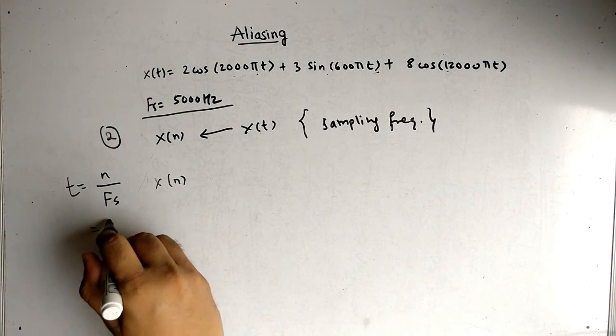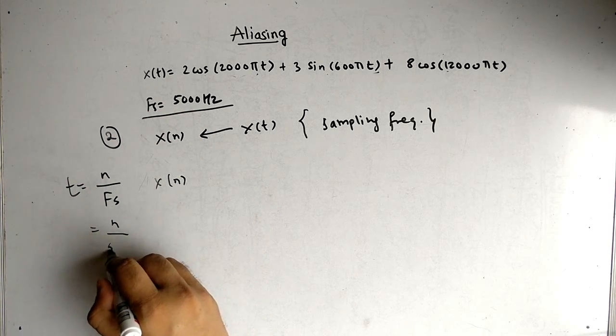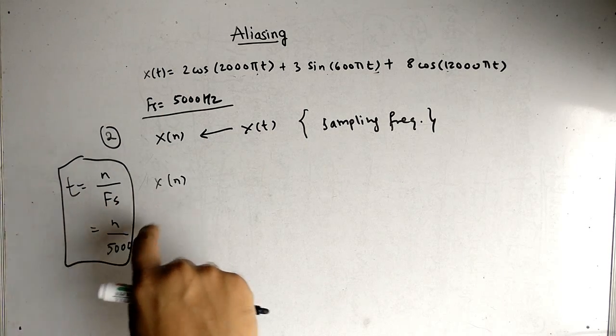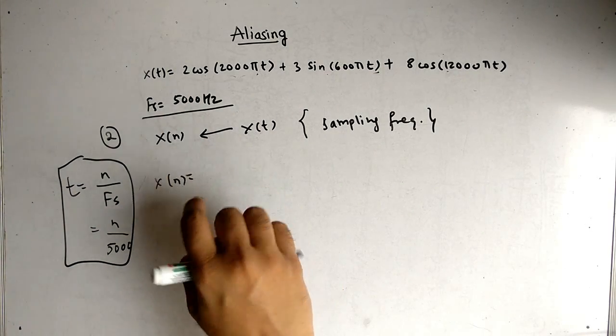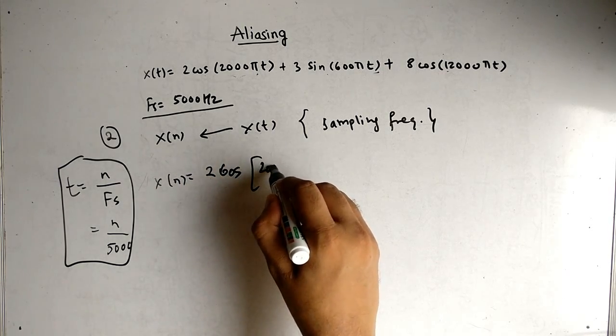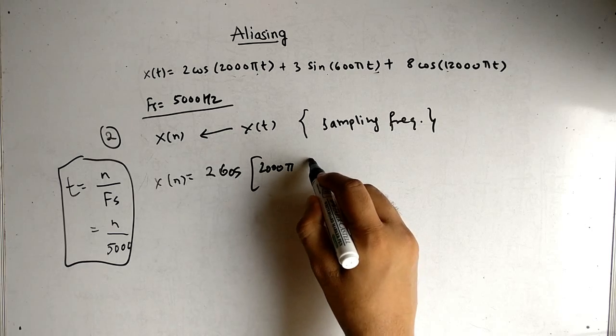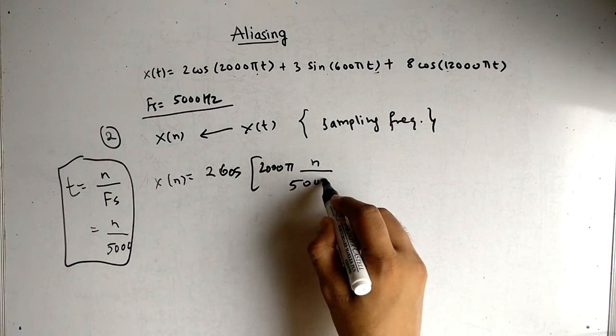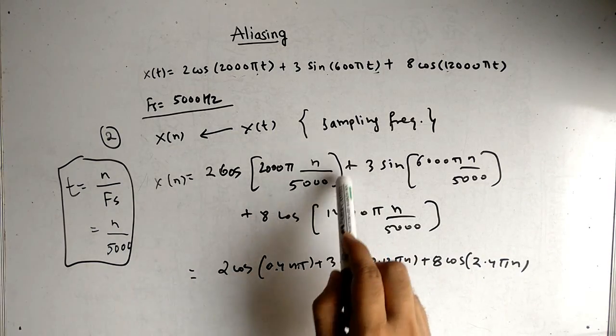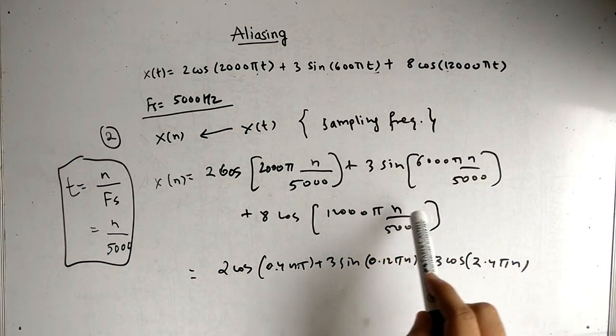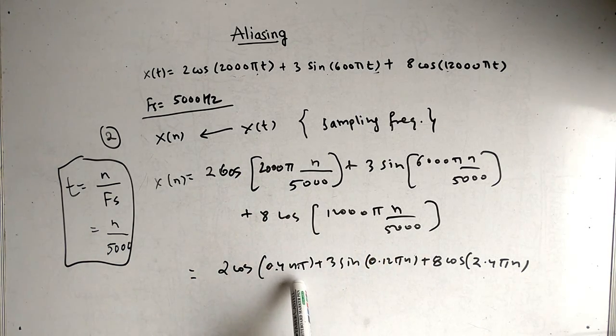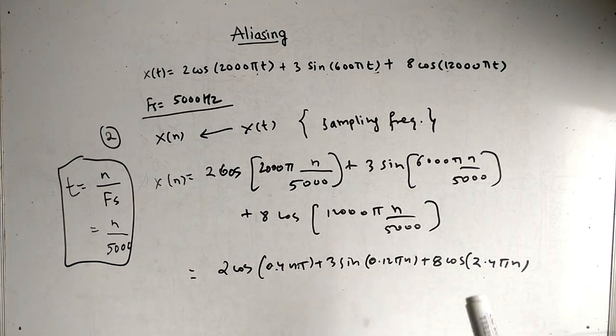t is equal to n by fs where fs is 5000. If we substitute this in the question, we will get x(n). So x(n) is 2 times cos of 2000 pi, where t is now n by 5000. Every t term is replaced by n by 5000. After simplification we get 2 cos 0.4 n pi plus 3 sin 0.12 pi and so on.